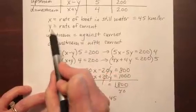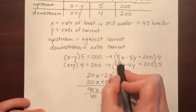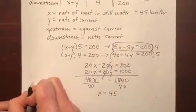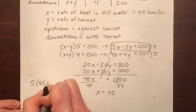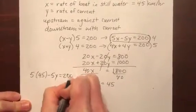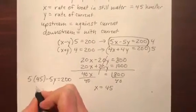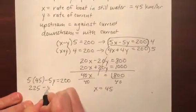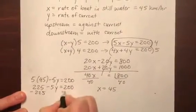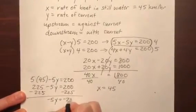I still need to find y, the rate of the current. So I can use either of these equations. Let's actually use the one with the fives. And put that back in. 5 times 45 minus 5y equals 200. So 5 times 45 is 225 minus 5y equals 200. Subtract the 225 from both sides. And I'd have negative 5y equals negative 25.